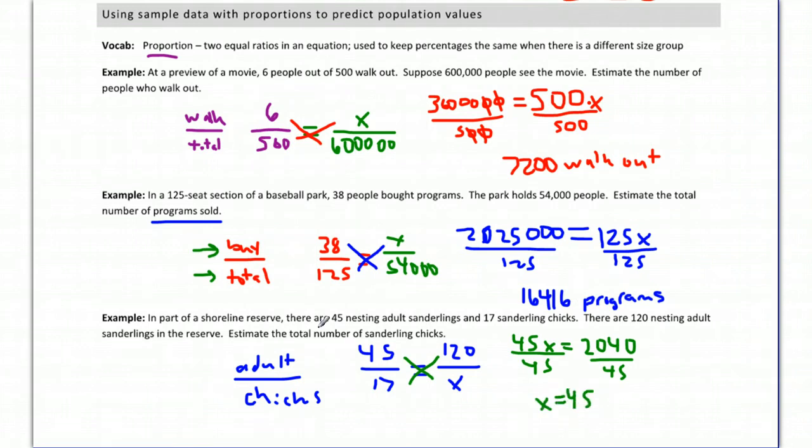And that gives us 45.3 repeating. So let's go with x is equal to 45. And because this is the number of chicks, I'm going to actually round it off to a whole number because it doesn't really make sense to have a decimal number of chicks.